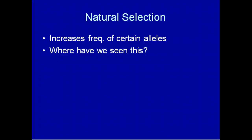We've seen this in a number of cases — for example, the increase in the frequency of drug-resistant strains of the tuberculosis bacterium, and the increase in frequency of the alleles that cause changes in beak shape and body size in medium ground finches. Natural selection is a pretty strong agent of change, and it consistently results in adaptation.